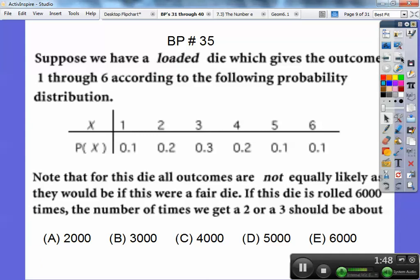Suppose you have a loaded die, which gives the outcomes one through six according to the following distribution. Notice they're not all equal to each other. The probability of rolling a one is 0.1 and then it's 0.2 and 0.3 and so on. So if this die were rolled 6,000 times, the number of times we'd get a two or three should be about...